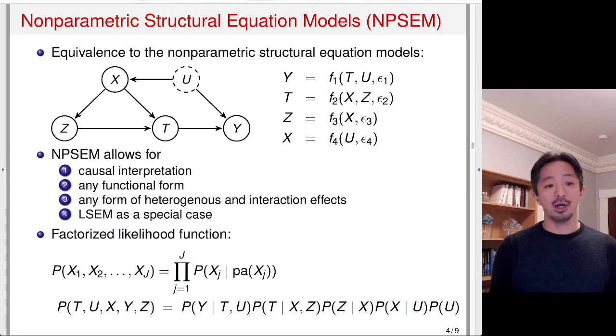The other special thing about DAG is that the likelihood function can be factorized by just taking each variable and then conditioning on the parent of that variable. As you can see, the joint distribution of, say, X1 to Xj variables can be factorized into a product of X1 to Xj, but the conditional distribution of each one given the parent of that variable.